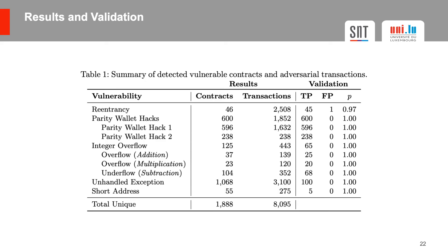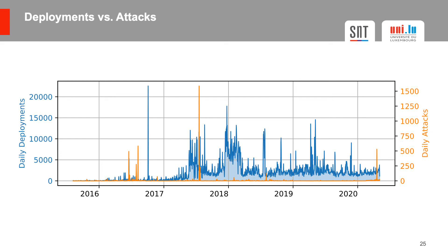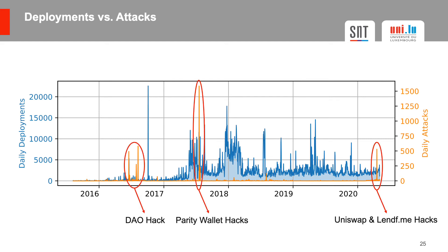The first research question we tried to answer is whether the number of attacks decreased over time as a result of the large number of publicly available tools to detect bugs in smart contracts. In this figure you can see the number of deployed smart contracts versus the number of attacks over time. Smart contracts are still being deployed with an average of more than 2,000 contracts per day. We see three large spikes in daily attacks: the first related to the DAO hack in 2016, the second related to the first Parity wallet attack, and the third related to the Uniswap and Lendf.me hacks in 2020.